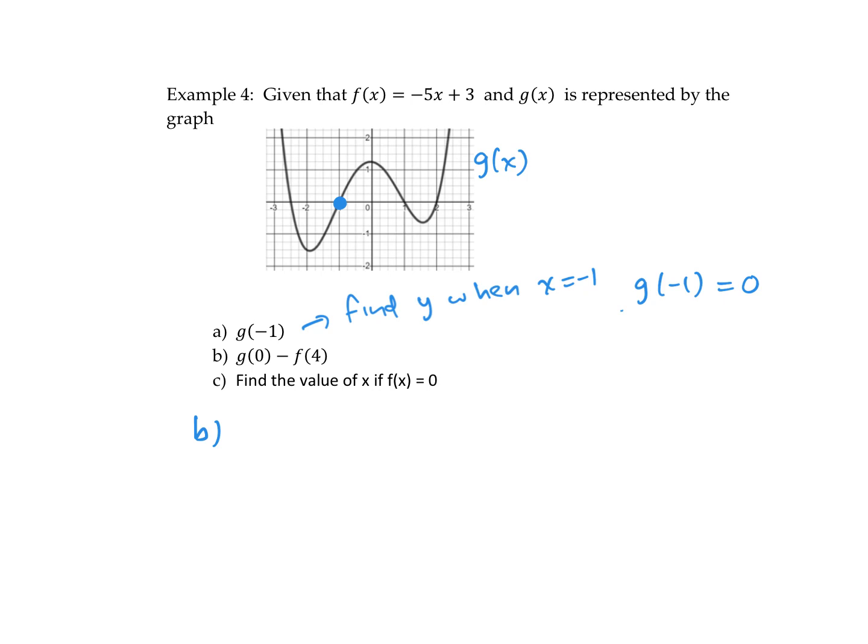So g of 0. Let's do this in a different color. I want you to find the value of the graph at 0. So here's 0, so it's right here. It looks like it is 1.2. Those increments are 0.2. So g of 0 minus f of 4. Well, g of 0 equals 1.2. f of 4 would be negative 5. Replace x with a 4 plus 3. So that's negative 20 plus 3 is negative 17. Two negatives make a positive. So adding 1.2 is 18.2.